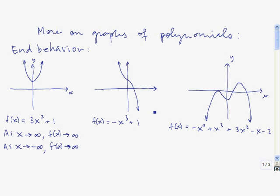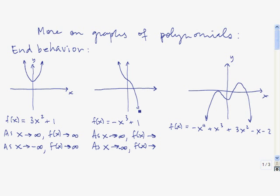Let's take a look at this cubic now. As x approaches infinity, in this case the function values are going down toward negative infinity. And as x approaches negative infinity, the function values are going up toward infinity.